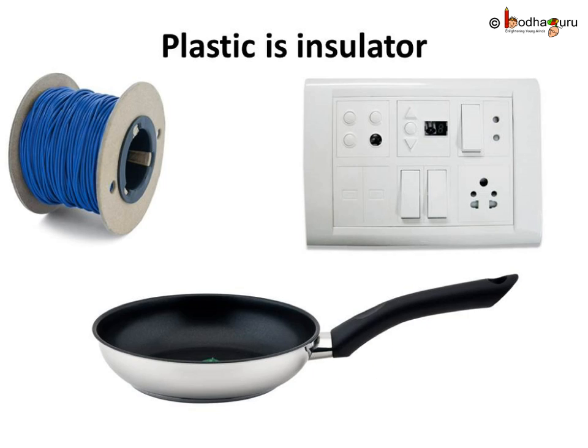Plastic is used to make switchboards, base of bulbs, body of electric appliances, and coating over electric wires. This is because plastic is an insulator. On the other hand, we see plastic handles on cookware as it doesn't get hot while we are cooking. This means plastics are poor conductors of heat too.